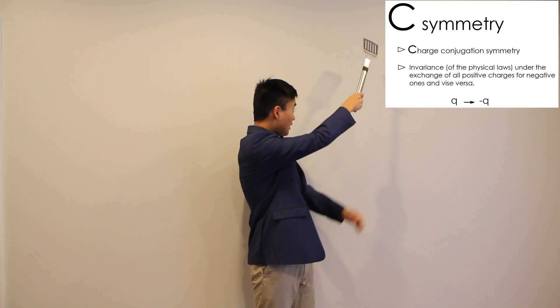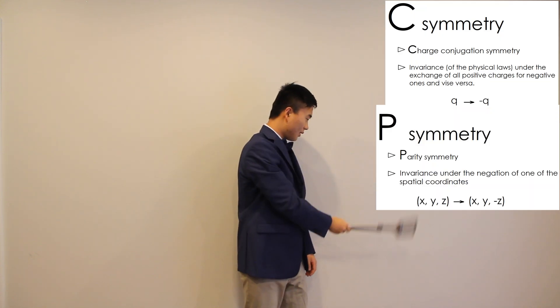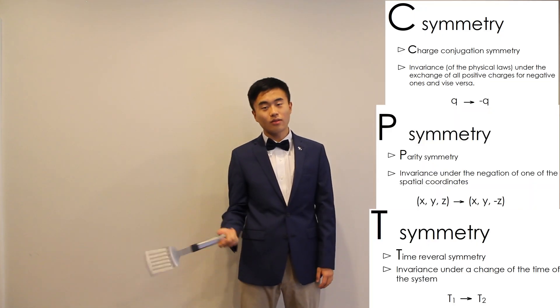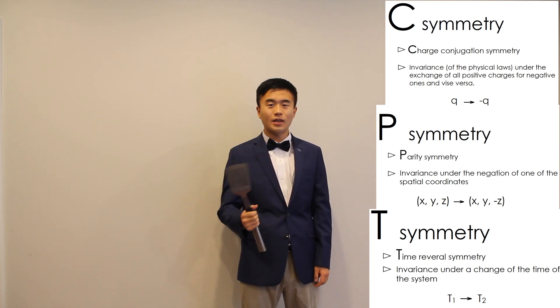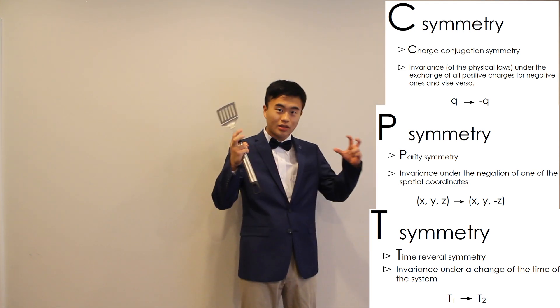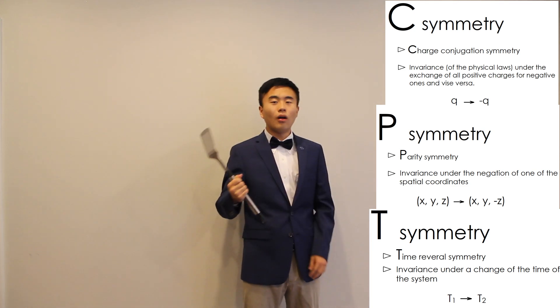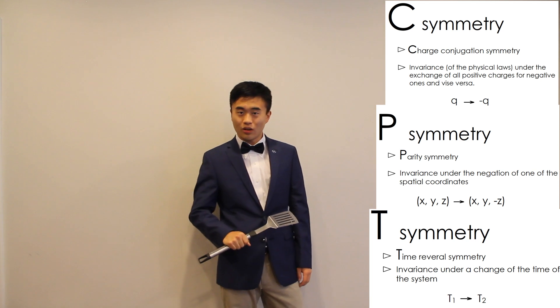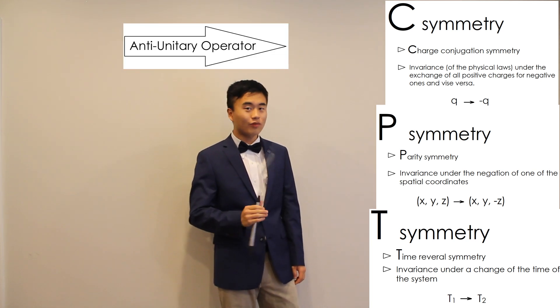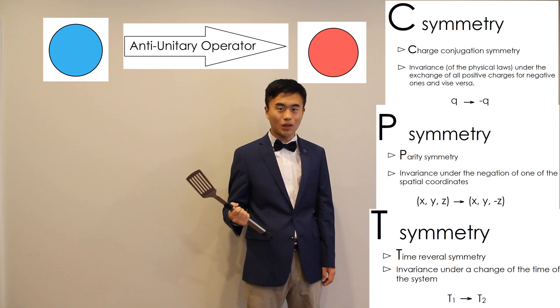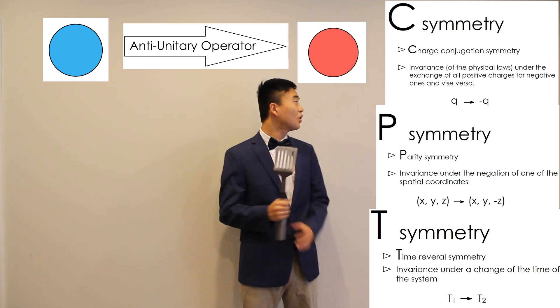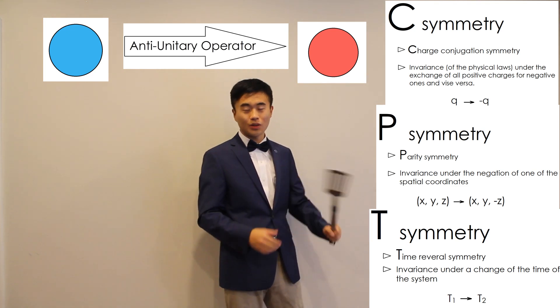In nature, there are three fundamental symmetries which we abbreviate as C, P, and T. They describe how the basic laws of physics should be the same under some sort of change, and can be combined together to form bigger symmetries. Mathematically, all symmetries are what are known as anti-unitary operators, or functions that negate some property of one's system when they're applied.